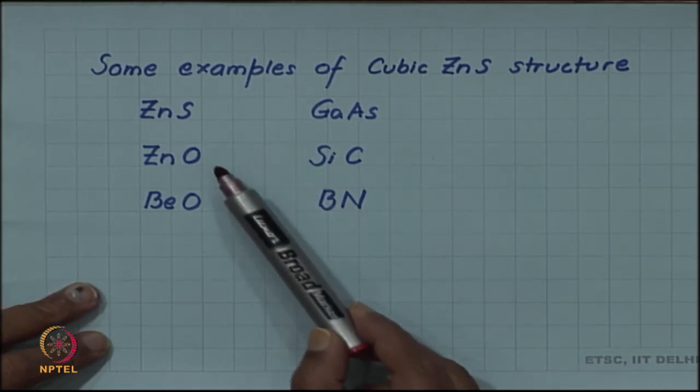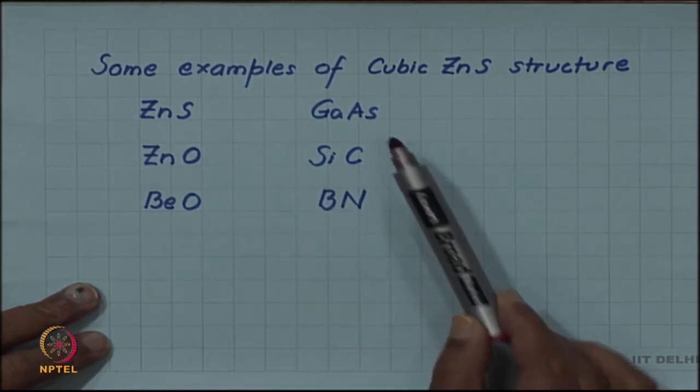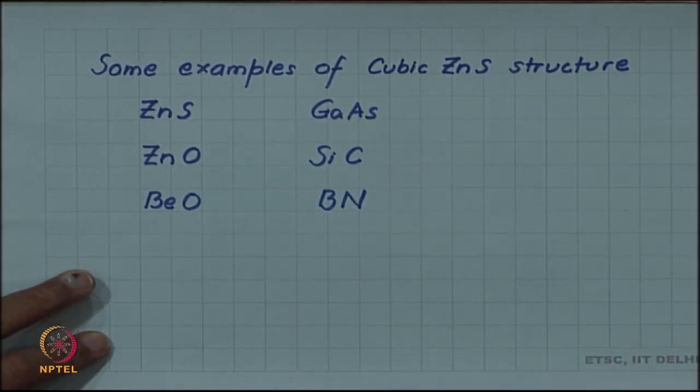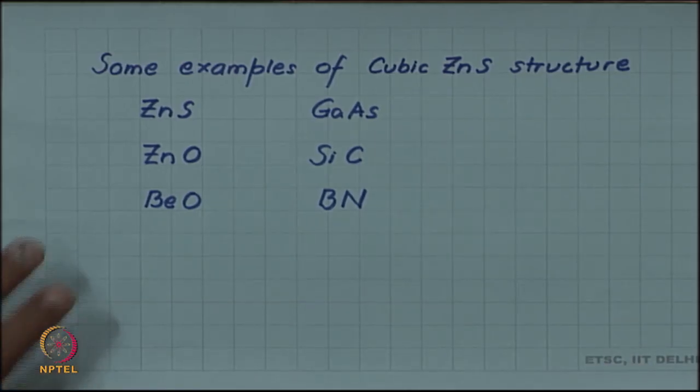Examples include zinc oxide, beryllium oxide, gallium arsenide, silicon carbide, and boron nitride, among many others.